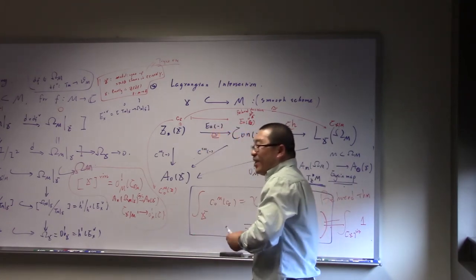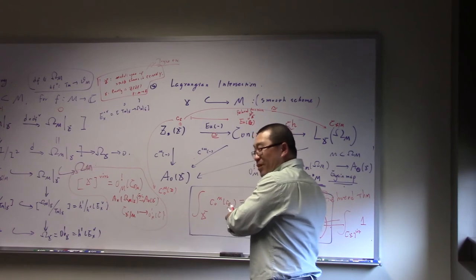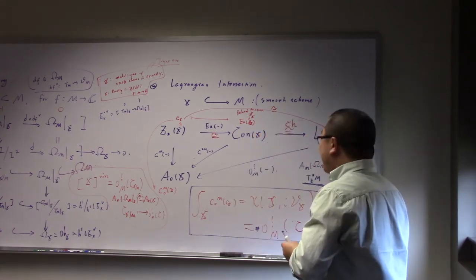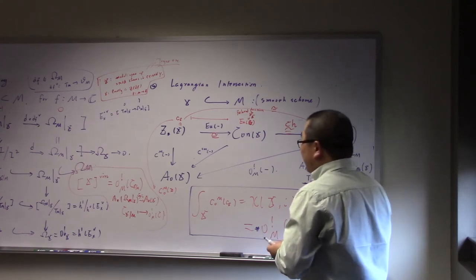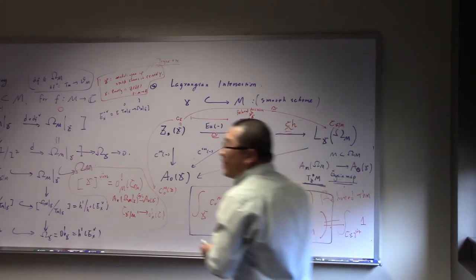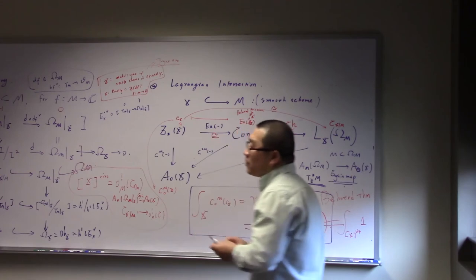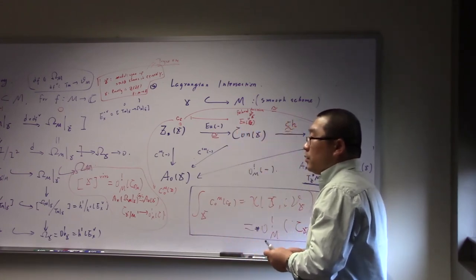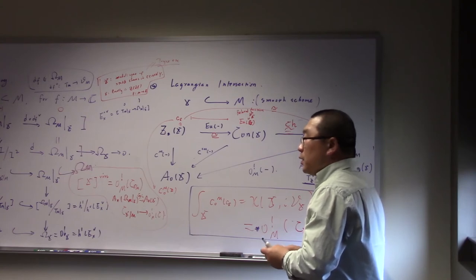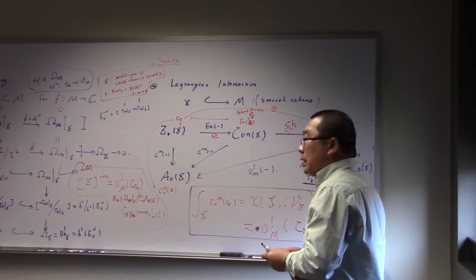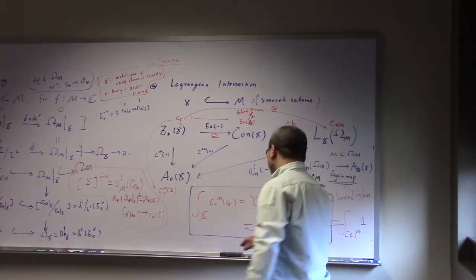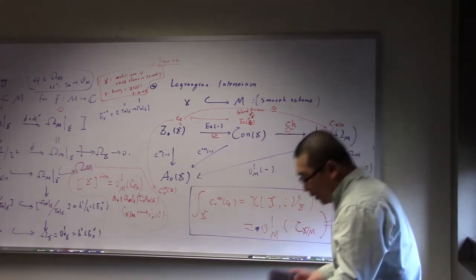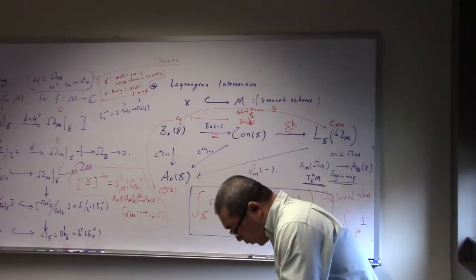Especially, if the moduli of X is coming from quiver moduli, it's non-proper. Then you can use very much. That's why I think right now Jim always calculates very much. Jim Brant. He has, right now — he said maybe he has more tools to calculate very much — but I haven't seen the number — still minus one or positive one, something like that. Because very much is very difficult to calculate. Even positive one or minus one is interesting in some cases.